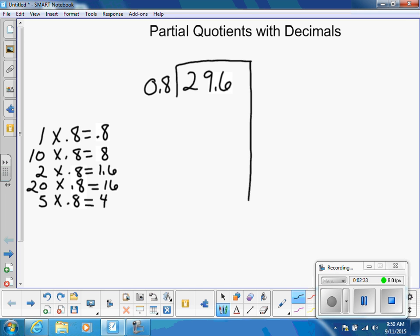This is the partial quotients method. We're looking at 29 and 6 tenths as our dividend, the whole that we have. We're going to use our facts and subtract out in easy chunks.